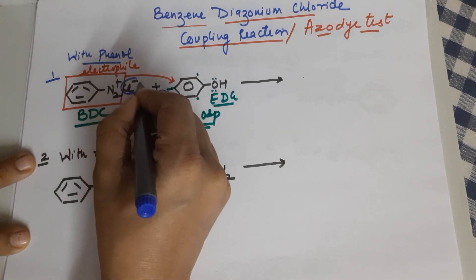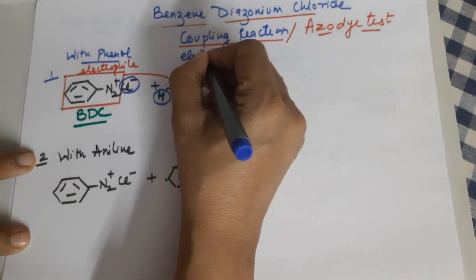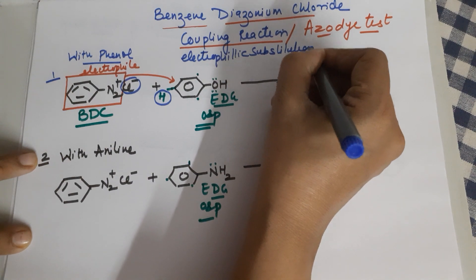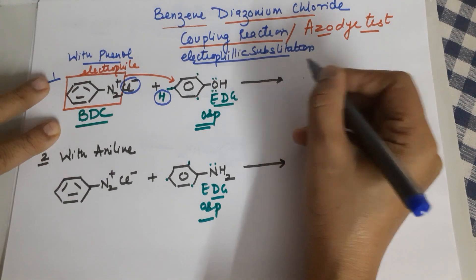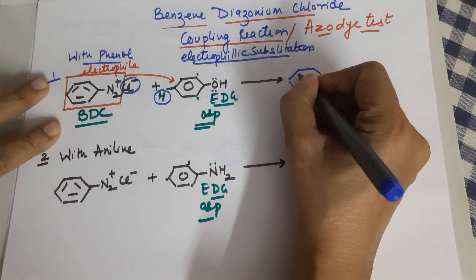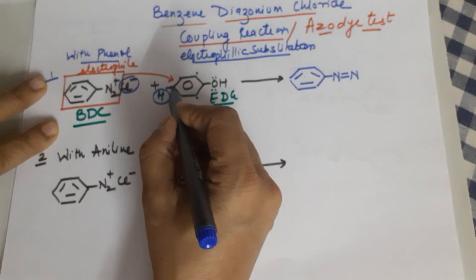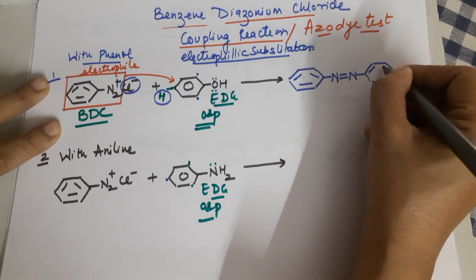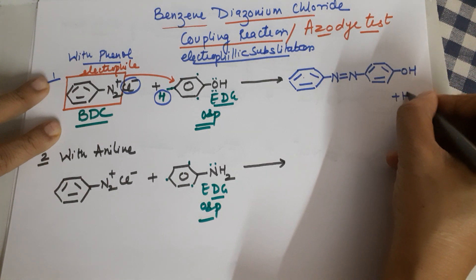So this diazonium has to go and attack at the para position, and there is a loss of HCl. There is a substitution — there is an electrophilic substitution reaction of the diazonium at the para position of phenol. This leads to the byproduct HCl. This is your benzene ring of the benzene diazonium chloride. You have the N2; the positive is neutralized by the negative at this point, and you have a phenol at this end.